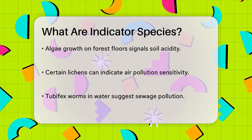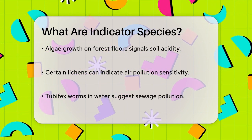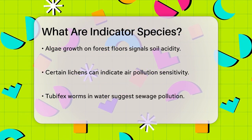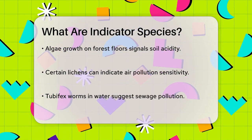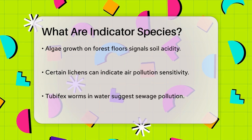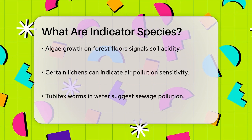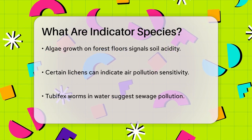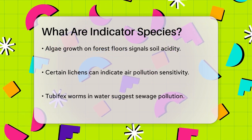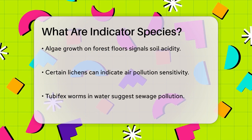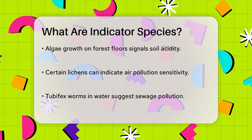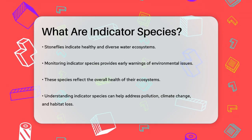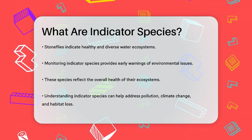Indicator species can also tell us about water quality. For instance, the presence of tube worms in water can indicate that the water is polluted with sewage waste. On the other hand, stoneflies, which are sensitive to pollution, can indicate that a water ecosystem is healthy and diverse.